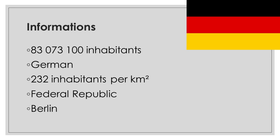Germany has 83,073,100 inhabitants. The official language is German. The population density is 232 inhabitants per square kilometer.